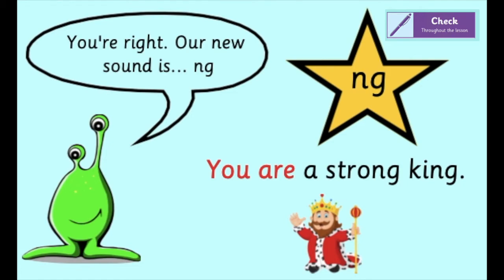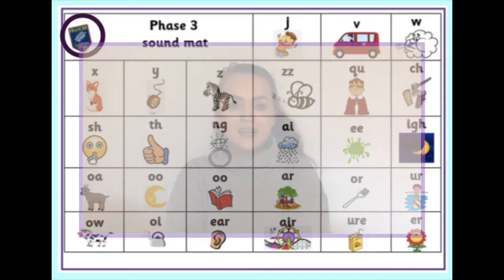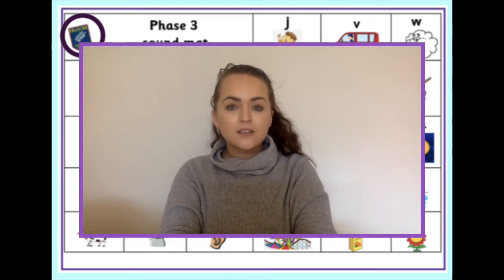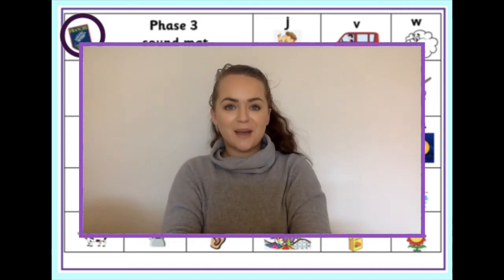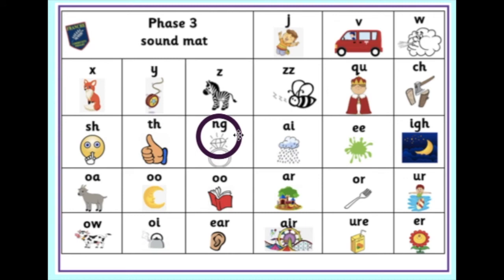What's our new digraph? Ng! Super. Can you join in with me as I do the action for the new digraph? Show me your muscles — ng! Let's have a look at the Jolly Phonics song for this digraph: 'If you're strong and you know it, say ng.' Now let's find ng on the sound mat — down two squares: one, two, and across two: one, two. We have landed on digraph ng for 'ring'.